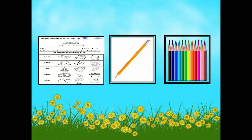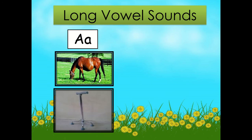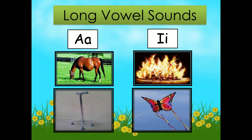Before we begin answering our worksheet, let us have first a short review on long vowel sounds and rhyming words. Now let's begin with the long vowel sounds. We have five vowel letters. The first one is the letter A, and the long sound of the letter A is 'a', as in 'mayor' and 'cane'. The next letter is the letter I, and the long sound of the letter I is 'I', as in 'fire' and 'kite'.